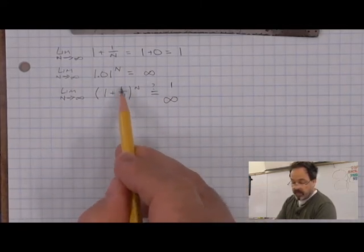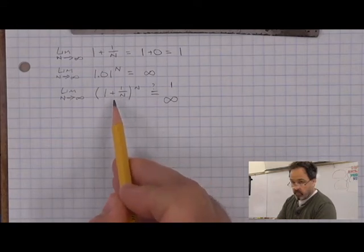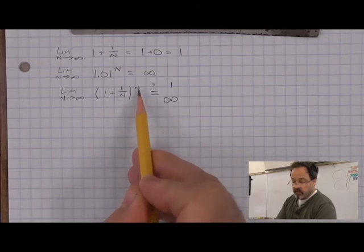There is a balance going on here. As this base, if this power base is getting closer and closer to 1, but still a little bit over, and at the same time, it's being raised to a higher and higher power, there's a balancing going on.